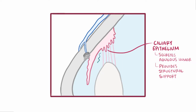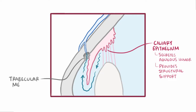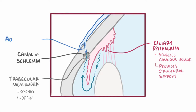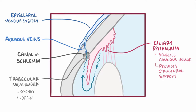That fluid is secreted into the posterior chamber, and then flows through a narrow space between the front of the lens and the back of the iris, through the pupil to the anterior chamber. From there the fluid flows out of the eye through the trabecular meshwork, which is a spongy tissue that acts like a drain, and this allows the fluid to go down into a circular channel called the canal of Schlemm, and finally into the aqueous veins, which are part of the episcleral venous system — the veins around the sclera of the eye.